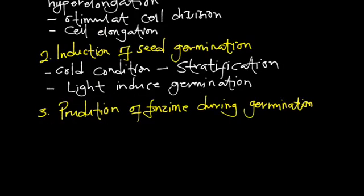Another function of gibberellic acid is production of enzyme during seed germination. It stimulates the production of numerous enzymes. One of these enzymes is the alpha-amylase, and this is usually found in cereals or grains. So there is another function of gibberellic acid.